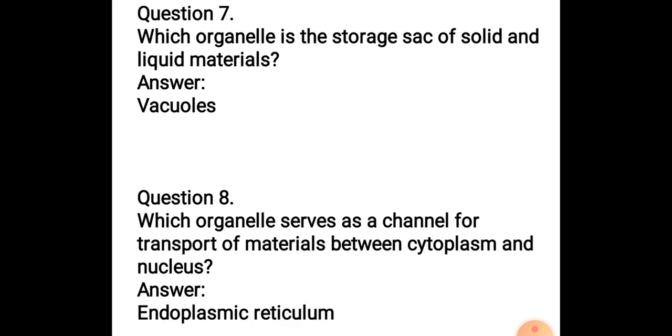Question 7: Which organelle is the storage sac of solid and liquid materials? The answer is vacuole. Solid and liquid materials are stored in vacuoles, and the outer layer of vacuole is known as tonoplast, which is a flexible layer. Question 8: Which organelle serves as a channel for transport of materials between cytoplasm and nucleus? The answer is endoplasmic reticulum. When we discussed the structure of nucleus, you saw the nuclear pores, and from these pores the endoplasmic reticulum arises and continues till the plasma membrane. One side is attached to nucleus and the other side to plasma membrane, so this structure helps in the transport of material.